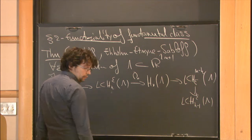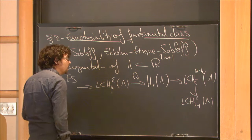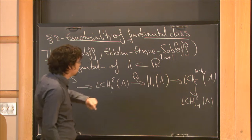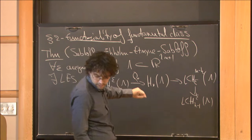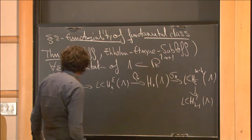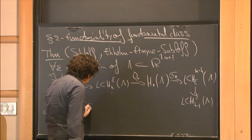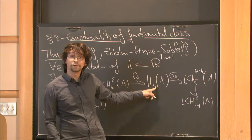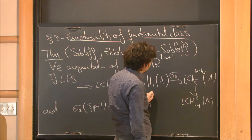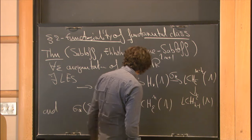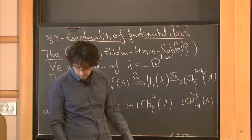What I will be interested in is the following: the image of the point — the generator of degree-zero homology — is always non-zero in cohomology. I will call this class C_ε, and this is what I call the fundamental class in Legendrian contact cohomology.